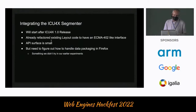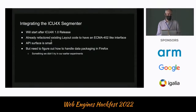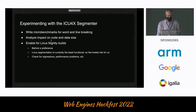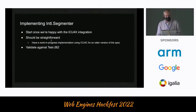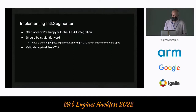For integrating the ICU4X segmenter, we're planning to do that after the 1.0 release. We've already refactored our layout code to have an ECMA-402-like interface and the API surface is relatively small. But we still need to figure out how we'll handle our data packaging in Firefox. Once that looks good, we'll write some micro benchmarks for word and line breaking, analyze the impact on code and data size, then plan to enable it for Linux nightly builds behind a preference at first. Linux is currently the least functional — it's the lowest risk but also the greatest potential reward. That will let us check for regressions and performance problems. Once we're happy with that, we'll look at implementing Intl.Segmenter. We have a work-in-progress version using ICU4C for an older version of the spec, and then we'll be able to validate it against Test262.